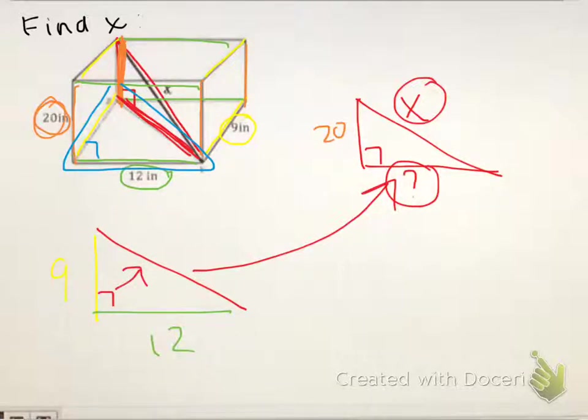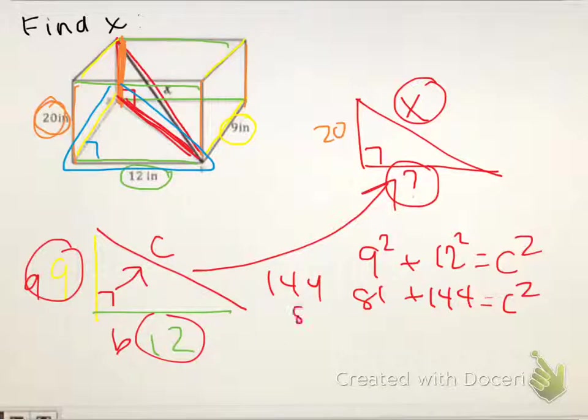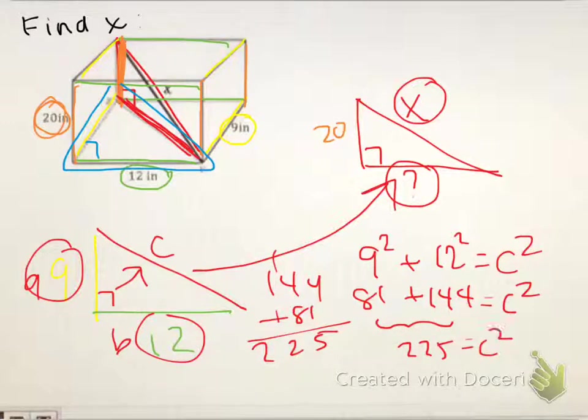So now, we could solve this problem first. I want to label my hypotenuse as C. Remember, it must be the longest side across from the right angle. And then I have my A and my B. So we would get A squared plus B squared equals C squared. 9 squared is 81. 12 squared is 144. That equals C squared. If I add 81 and 144, I get 225. And then to undo the squaring, I just square root both sides and I would get 15.